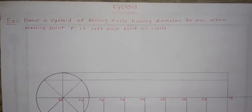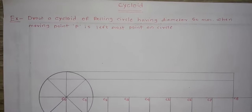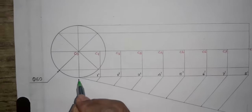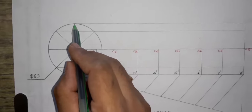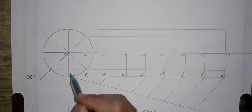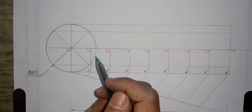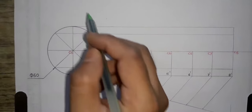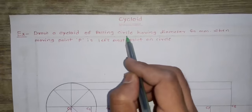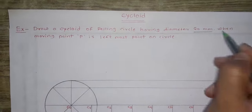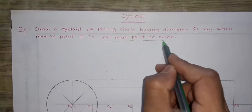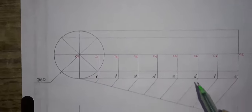Hello students. In the previous two lectures we learned how to draw a cycloid curve when point P is on the ground, and when point P is at the topmost point on the circle. Now today we are going to learn a cycloid curve when point P is at the leftmost point on a circle. The problem statement is: draw a cycloid of a ruling circle having diameter 60 mm when the moving point is the leftmost point on the circle.